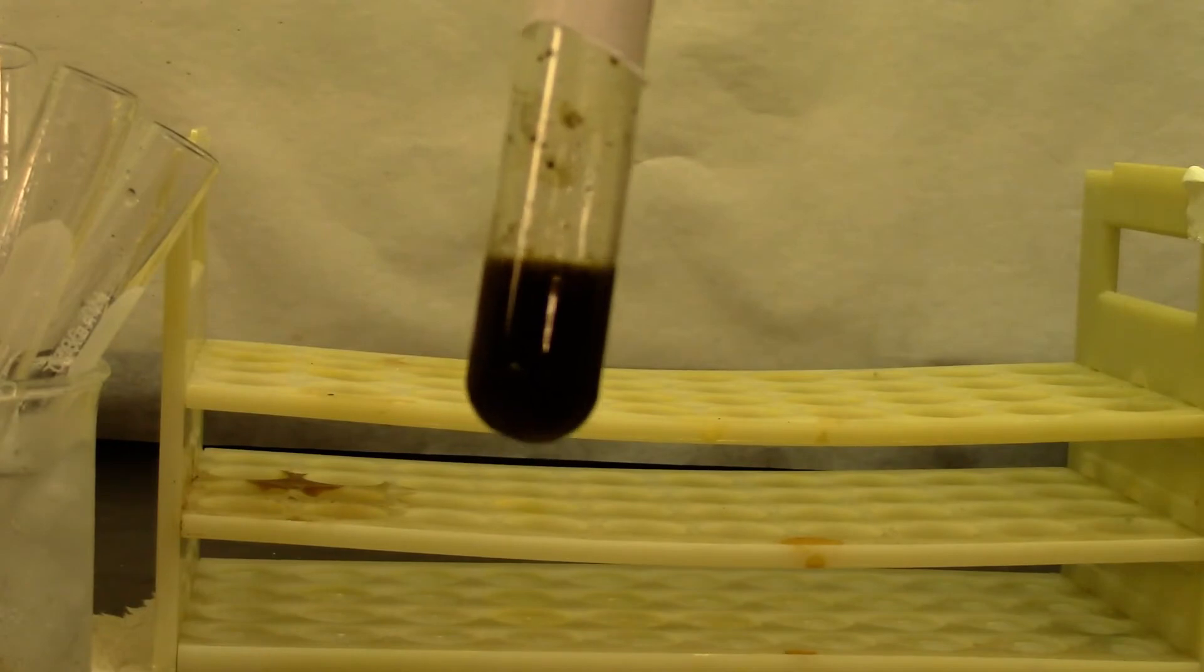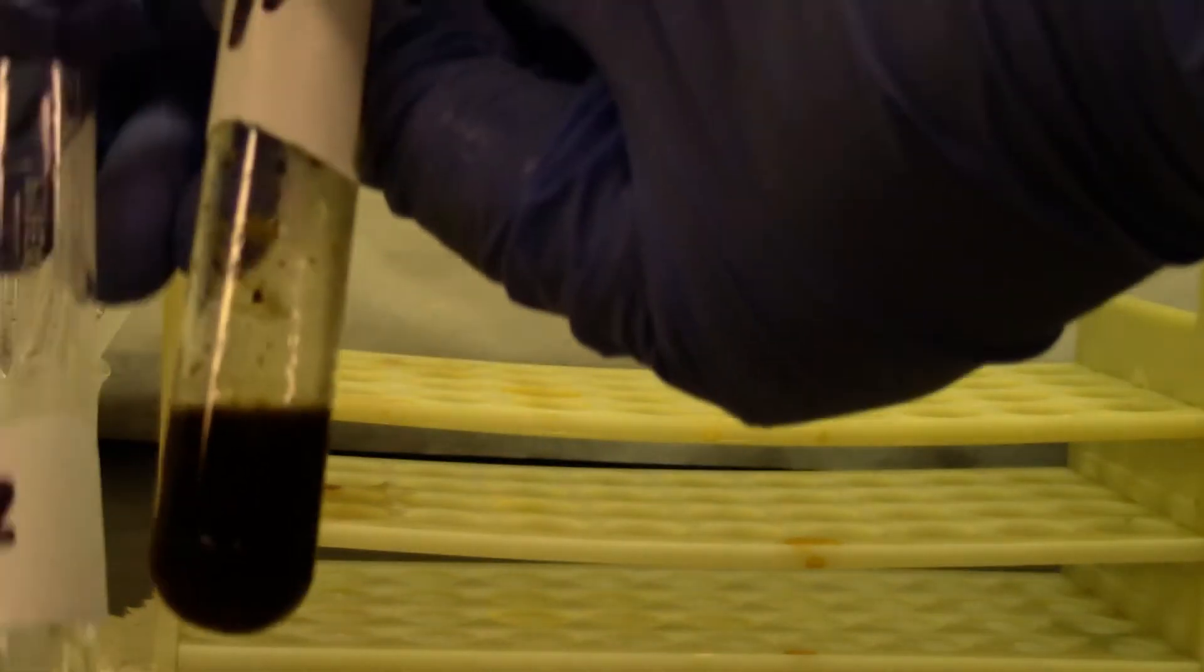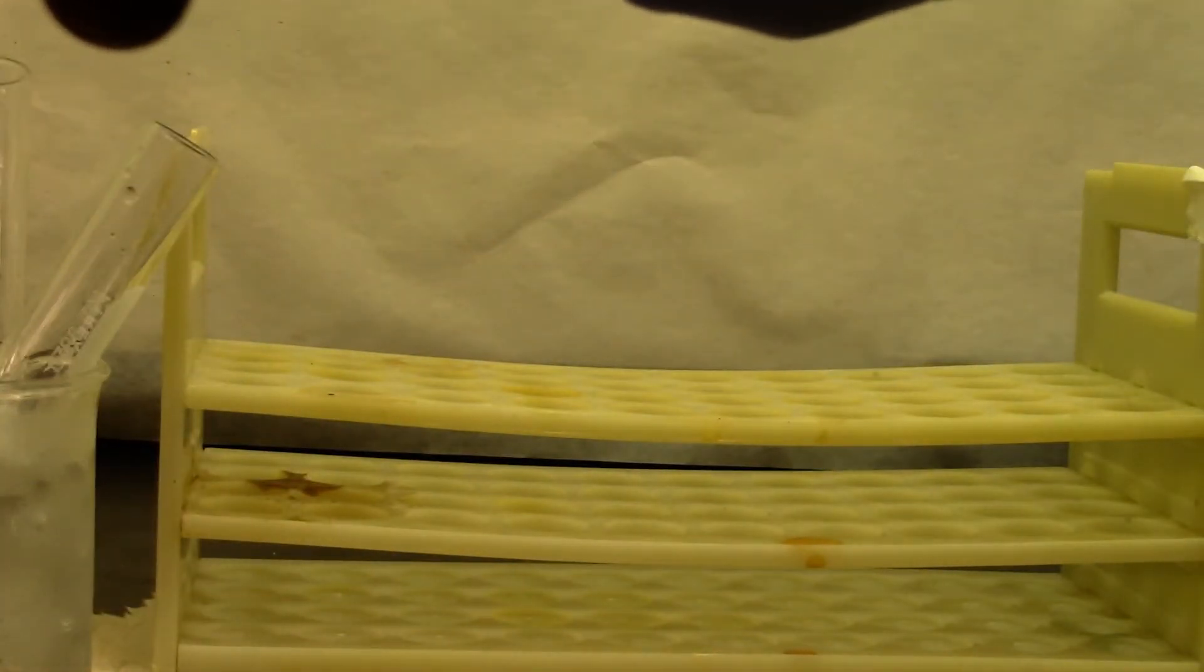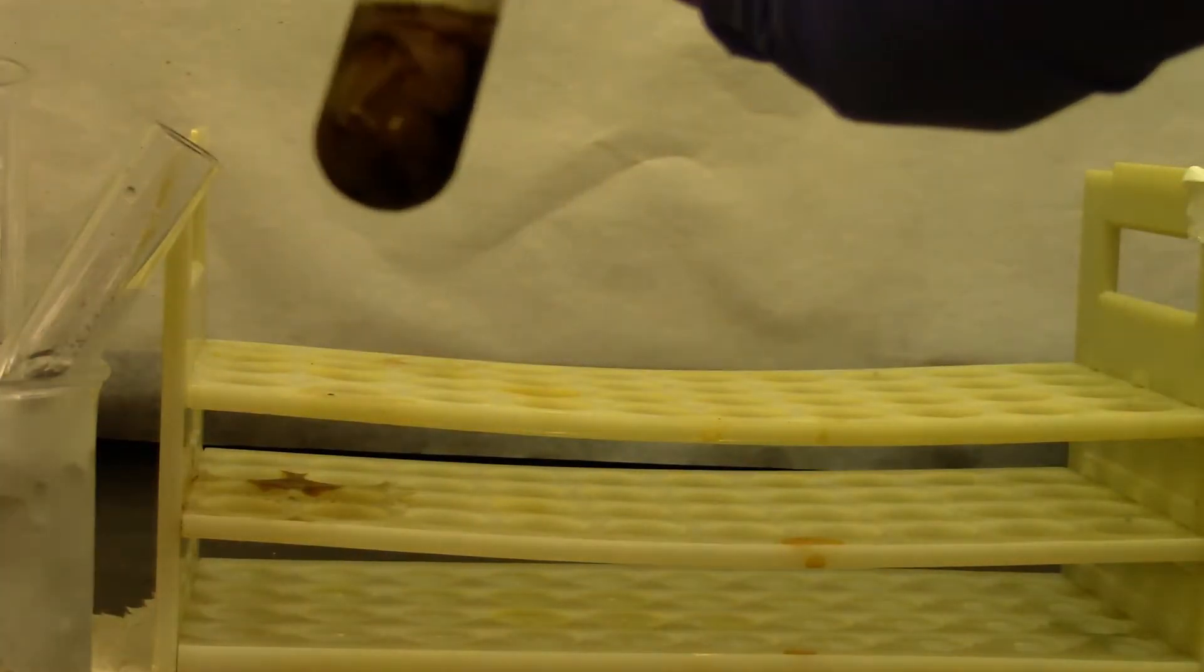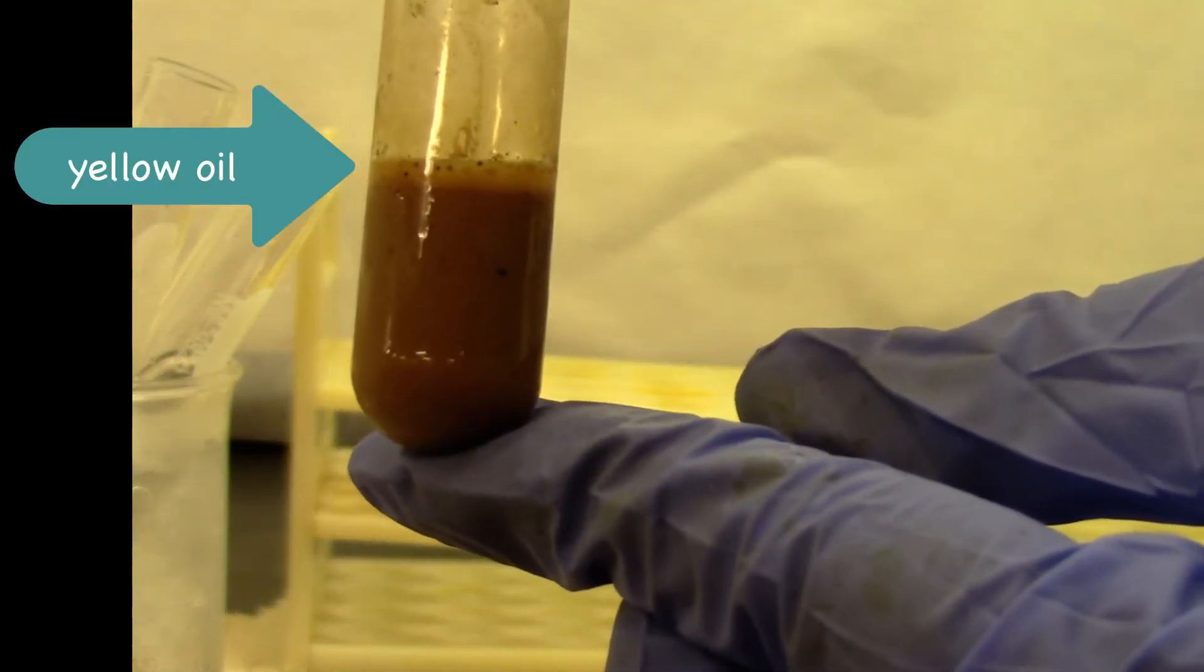This is my secondary amine, N-methyl aniline. I am going to add the sodium nitrite solution in here as well. There is an oily layer formation on the top, which indicates secondary amine.